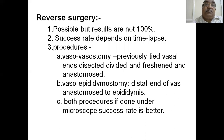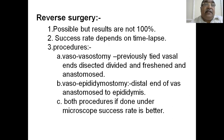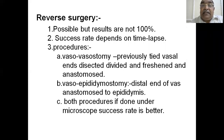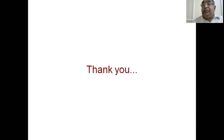Reverse surgery is possible but results are not 100% guaranteed; success depends on the time elapsed since vasectomy. Two types of reversal procedures exist: vasovasostomy — where the cut ends of the vas are dissected out, freshened, and anastomosed to each other — and vasoepididymostomy — where the distal end of the vas is freshened and anastomosed to the epididymis. Both procedures, when done under a microscope, have a better success rate, though the conception rate may not be equally high.